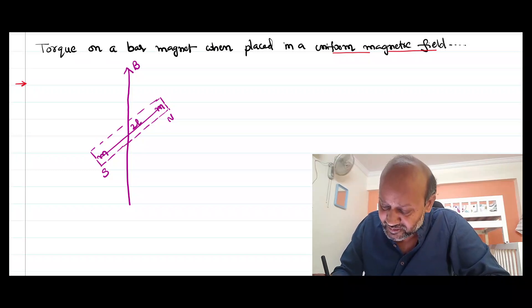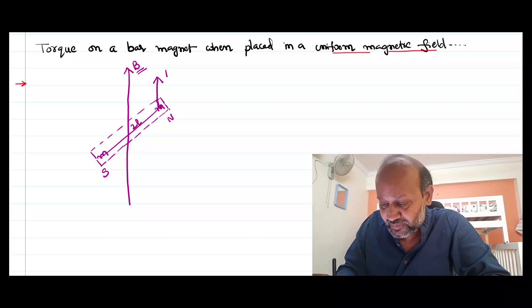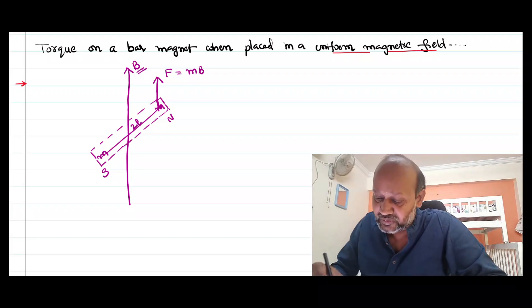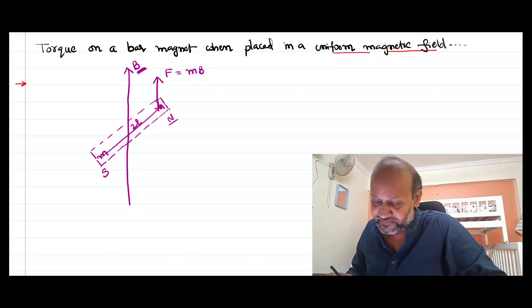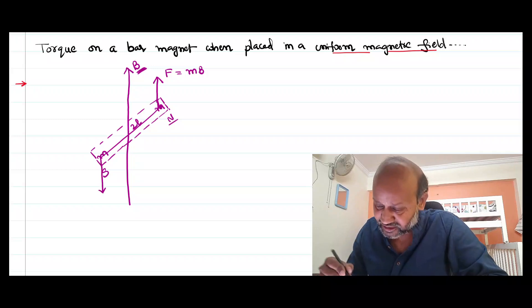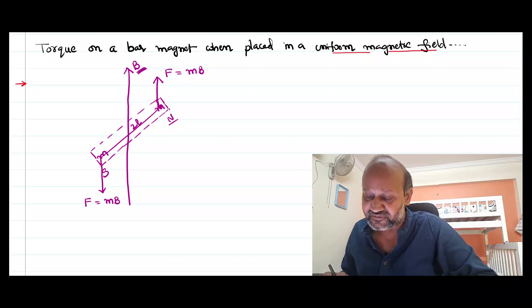Each of these poles, when placed in a magnetic field B, experiences a force — we have derived this expression already earlier. How much is that force? F is equal to mB. Please note that the north pole experiences the force along the direction of the field, whereas the south pole experiences the same magnitude of force but in the opposite direction, because the poles are of opposite nature.